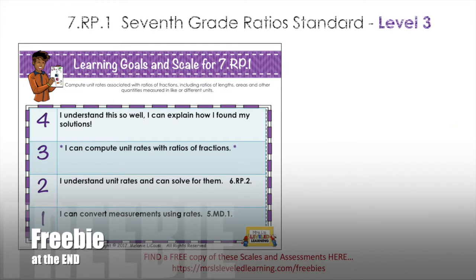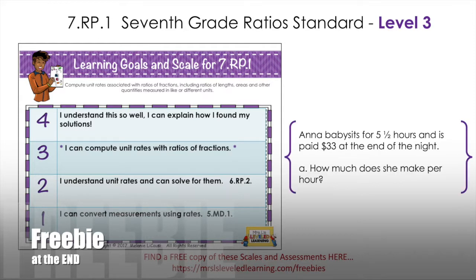Level three is the seventh grade expectation: I can compute unit rates with ratios of fractions. When introducing this for the first time, make sure students remember what fractions are about. The tricky thing is fractions are also ratios — part to whole — but in this case the fraction is a part being compared to another part, making a total ratio. Make sure students remember that unit rates require a denominator of one in whatever two quantities they compare.